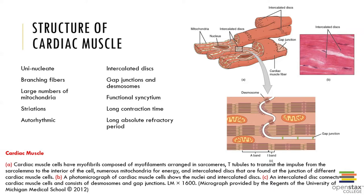We're going to learn about a term called cardiomyocytes, which are relatively small and basically columnar-shaped, and they branch off. They're metabolically very active and therefore possess large numbers of mitochondria, and they're richly supplied with capillaries. These cardiomyocytes possess striations because of the highly organized arrangement of the myofibrils into repeated sarcomeres. A sarcomere is the smallest functional unit of a muscle, so we're really talking about things at the molecular and cellular level here.